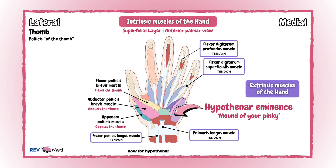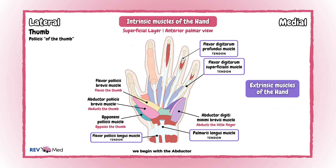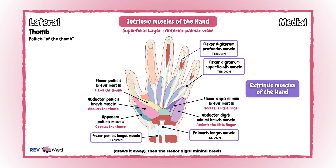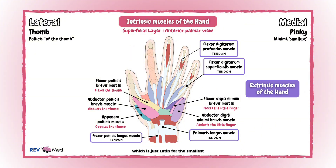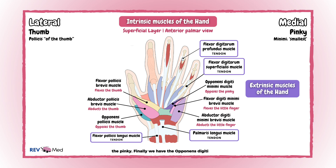Now for the hypothenar, which is the pinky side. We begin with the abductor digiti minimi muscle, which abducts the little finger — draws it away. Then the flexor digiti minimi brevis, which flexes the little finger as its name suggests. Minimi is Latin for 'the smallest' — in our case, the pinky. Finally, we have the opponens digiti minimi, which opposes the little finger towards the thumb.